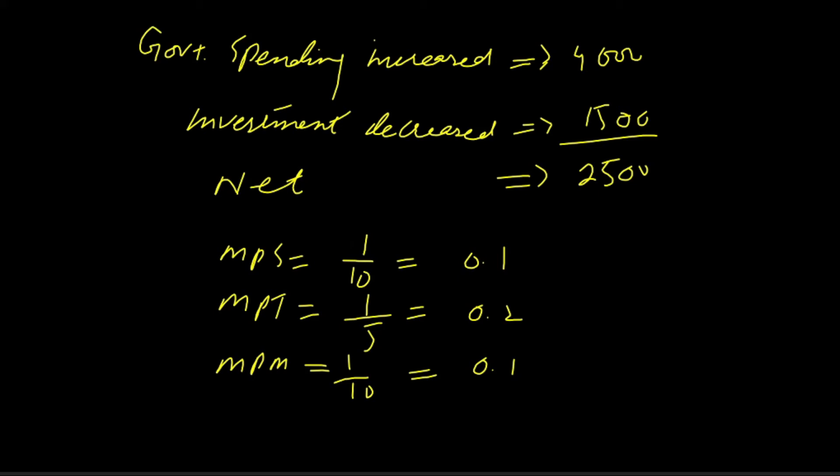Hello everyone, this question came in exam today. The question was: government spending increased by 4000, investment decreased by 1500, so net investment would be 2500.